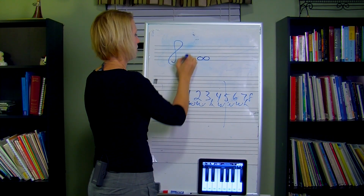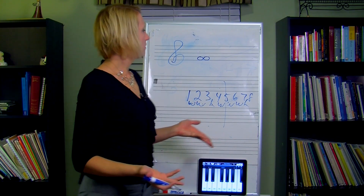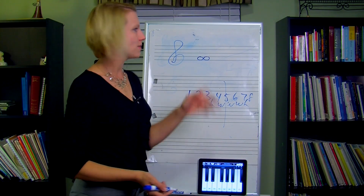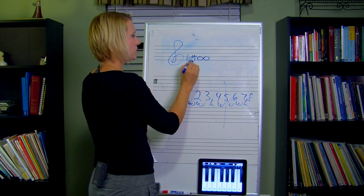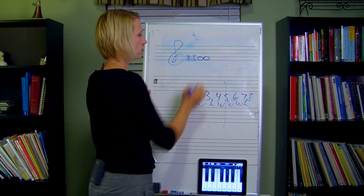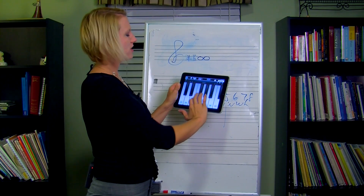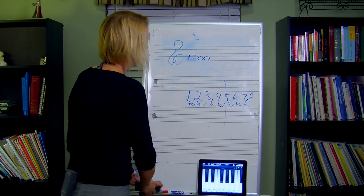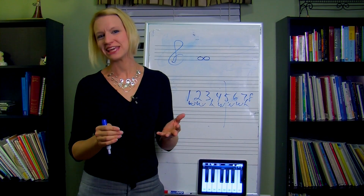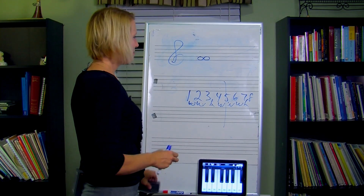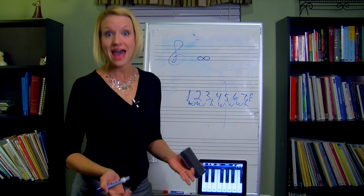Let's do a unison. How can we make an augmented unison? The same note — all we have to do is add a sharp to one of those notes. Sometimes you'll put a natural in front of one and a sharp in front of the other, so they're a half step apart. As for diminished unison, it's kind of a trick question — there's not really such a thing as a diminished unison.